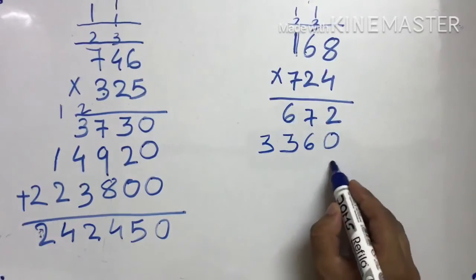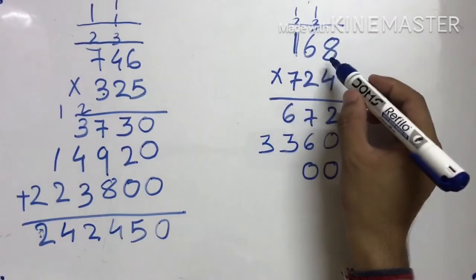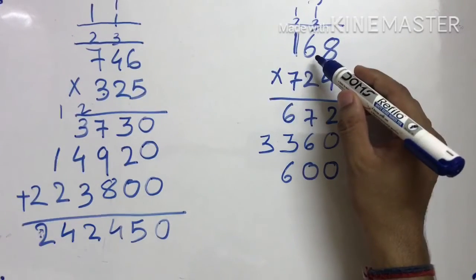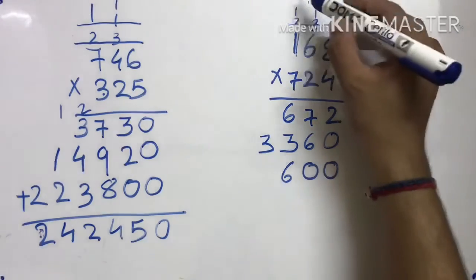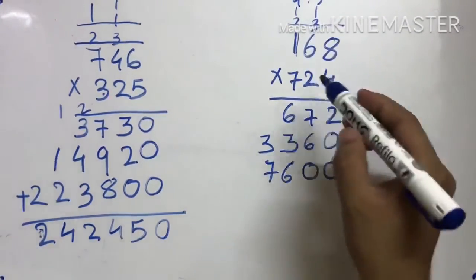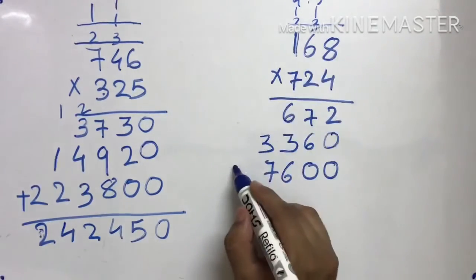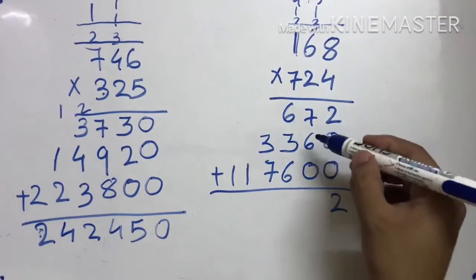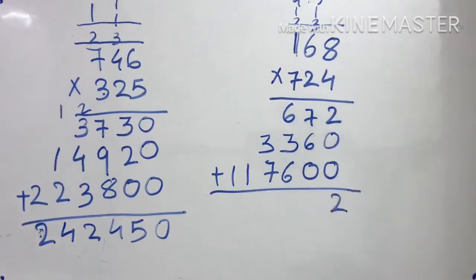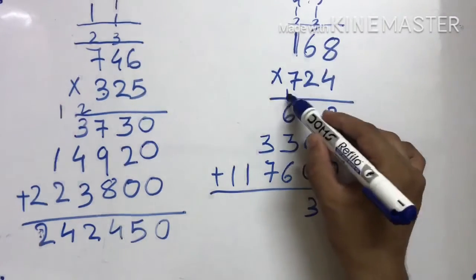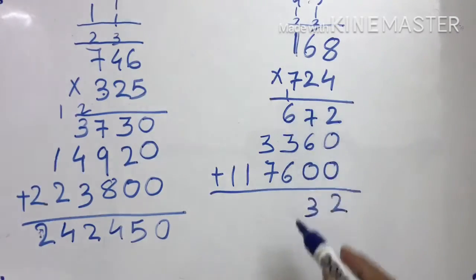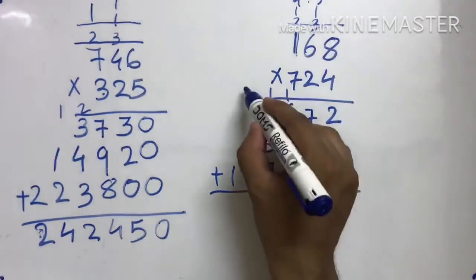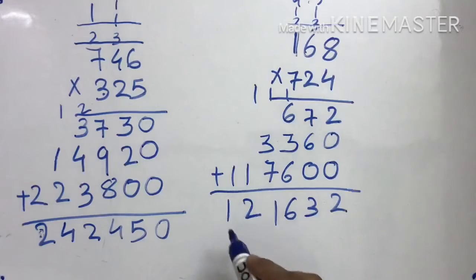Abhi yah number multiply karne se pehle last ke 2 digits mein 0 daalo. 7 × 8 = 56. 7 × 6 = 42, 42 plus 5 = 47. 7 × 1 = 7, 7 plus 4 = 11. Now we have to do addition. 2 plus 0 plus 0 = 2. 7 plus 6 = 13. 1 plus 6 = 7, 7 plus 3 = 10, 10 plus 6 = 16. 1 plus 3 = 4, 4 plus 7 = 11. 1 plus 1 = 2, and 1. This is the answer.